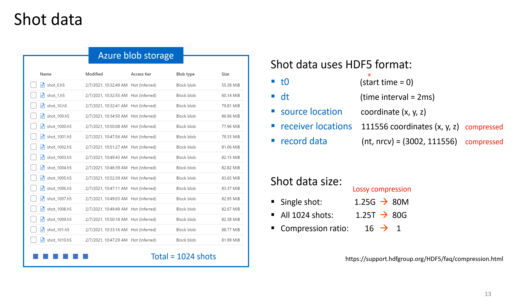HDF5 offers a convenient key-value pair format. For each shot, we can store time, time interval, source and receiver locations, and record data — representing what we need for real data processing. HDF5 also allows you to easily incorporate a third-party compression algorithm. We compress both receiver locations and record data with a compression ratio of roughly 16 to 1 in this case.